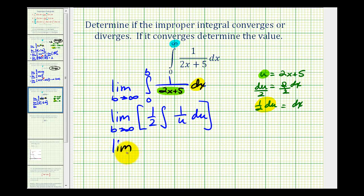So we'll have the limit as b approaches infinity of one half times the antiderivative of one over u with respect to u. That's going to be natural log u. So we'll have the natural log of two x plus five.